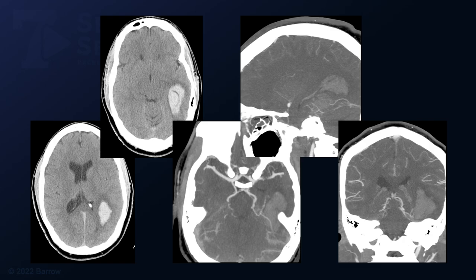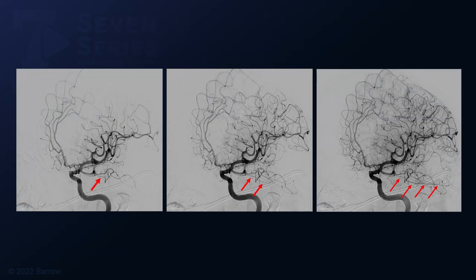These are his CT images from the time of initial presentation. They show acute interparenchymal hemorrhage involving the left basal temporal lobe with no obvious tangle of arteries or veins. His initial angiogram was negative for any evidence of arteriovenous malformation.